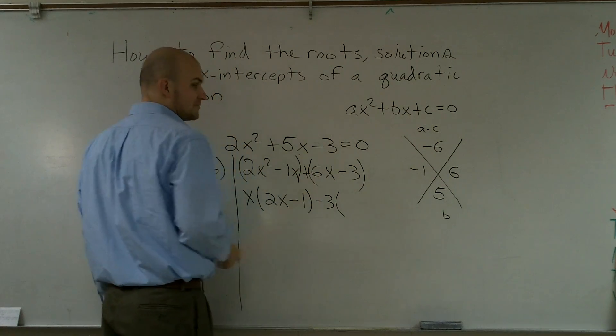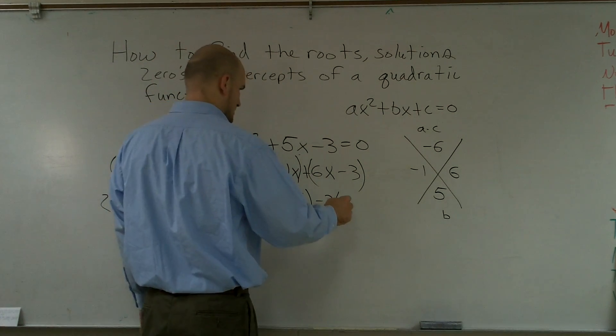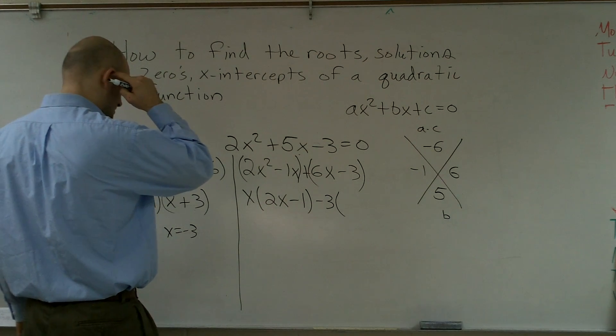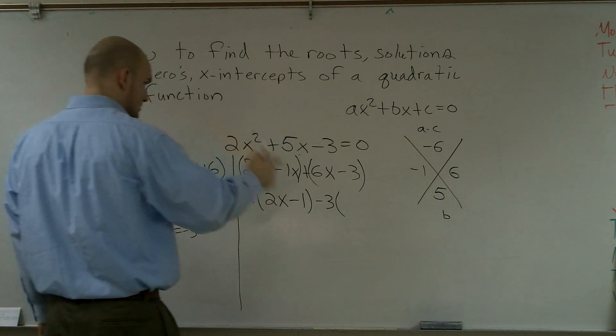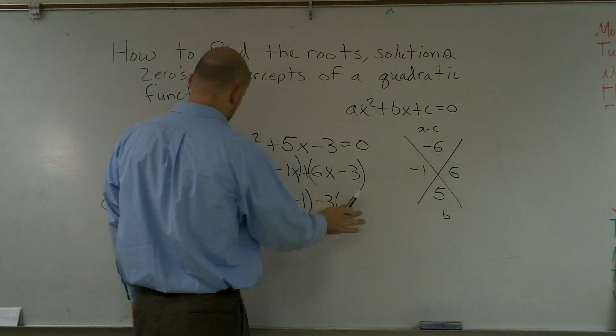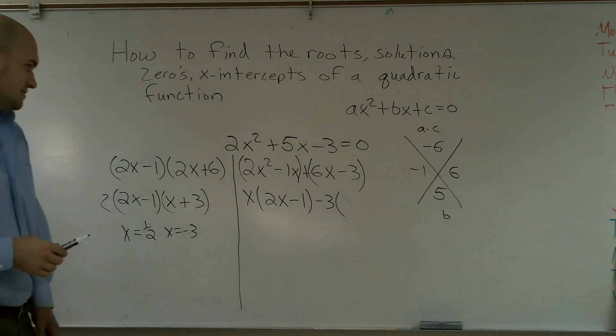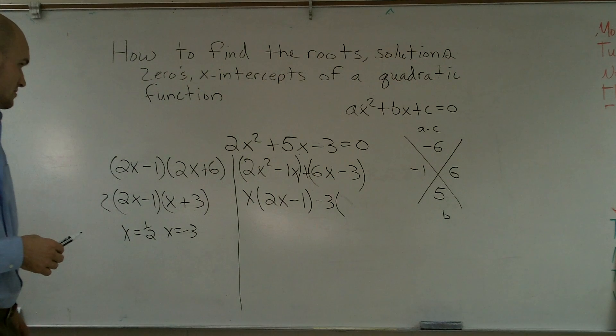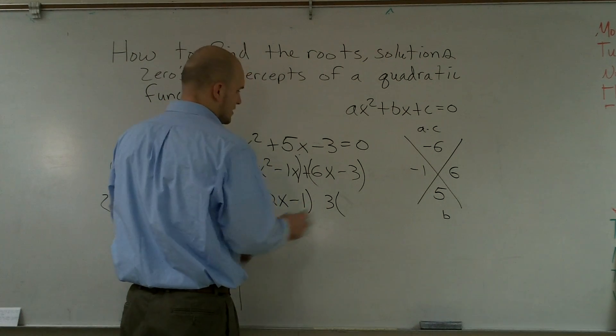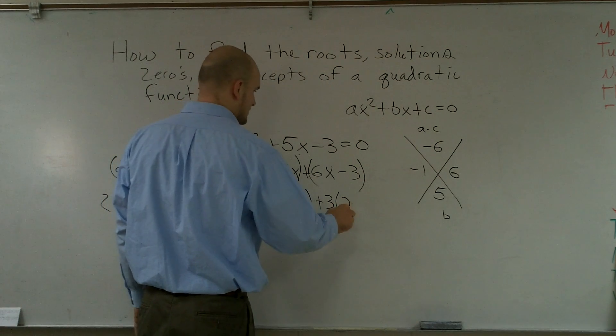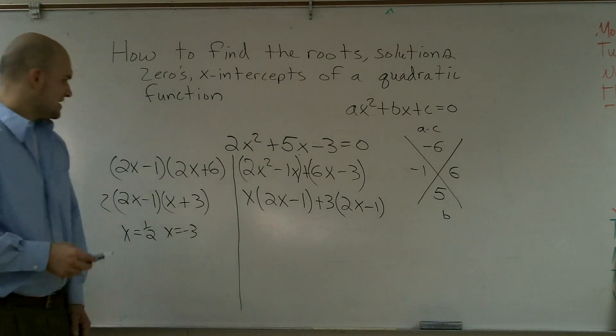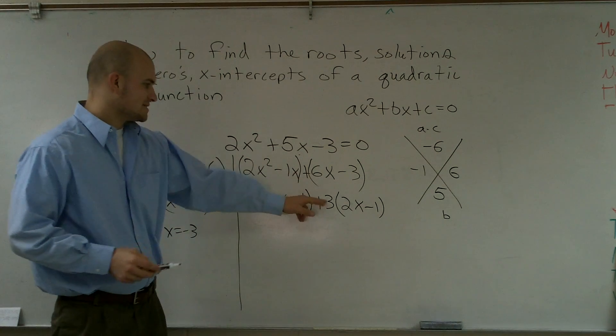Then now what I'm going to do is I'm going to split this up into my two binomials and I'm going to factor out what I can. Here I can factor out an x. So I'm left with 2x minus 1. Here I can factor out a positive 3. If I factor out a positive 3, I'll be left with 2x minus 1. There we go.